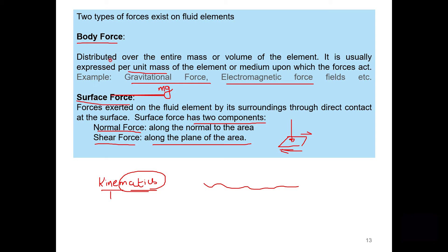To summarize: body force is proportional to the volume (or weight) of the body; surface forces are dependent on the area of contact; and the third type is line forces. Line forces are proportional to the length of the body - for example, surface tension, which is measured as force per unit length, is classified as a line force. So there are mainly two types plus line forces, which are proportional to the length of the body.